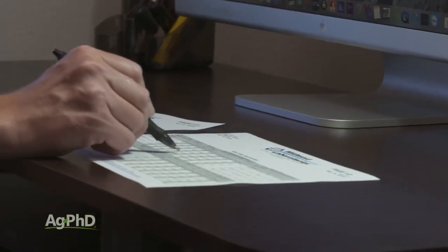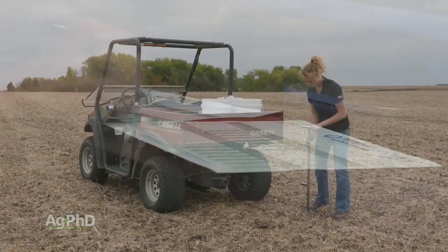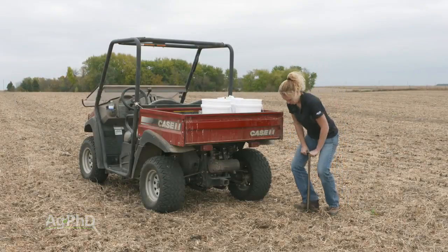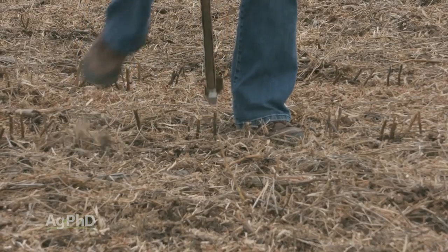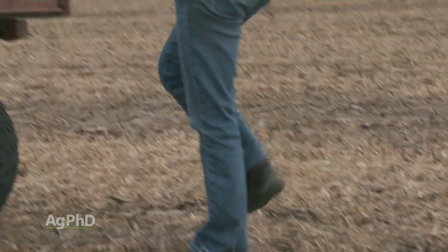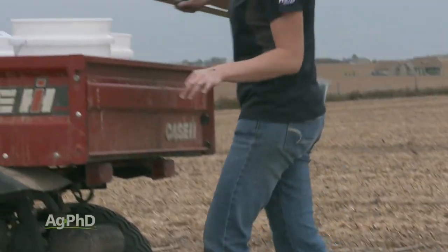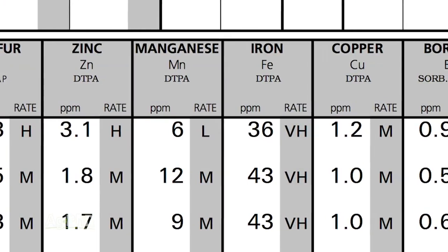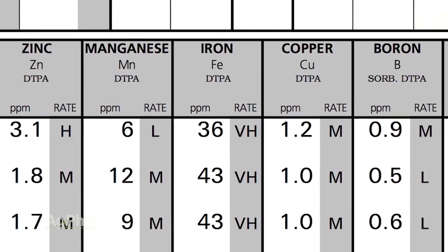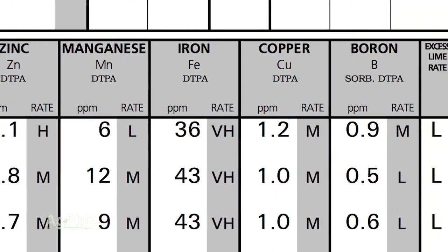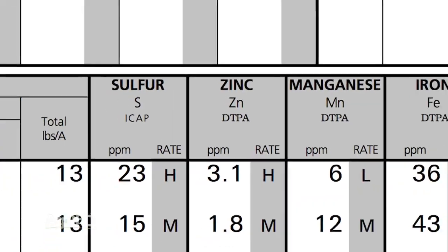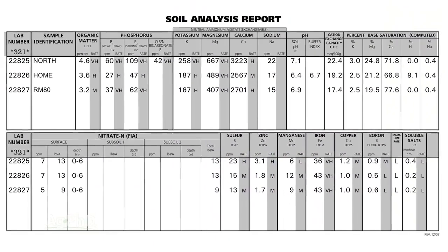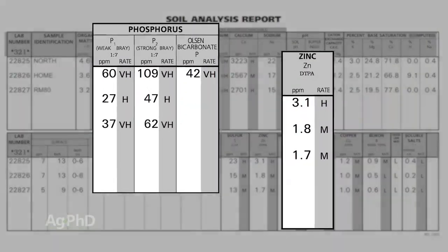I don't want to mislead you today and have you thinking that Brian and Darren said you just have to test for zinc, that it's going to be the most important micro. It may be the most important micro for you on your soil, but you do need to do a complete analysis and look at all the different micros. We see some interactions between nutrients, whether micronutrients or micronutrients with primary nutrients — like today we're talking about zinc, and one of the big primary nutrients we look at is phosphorus.